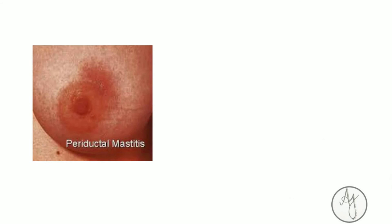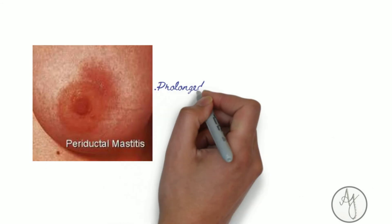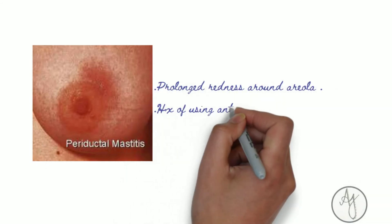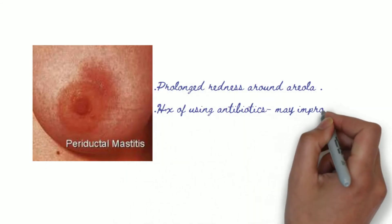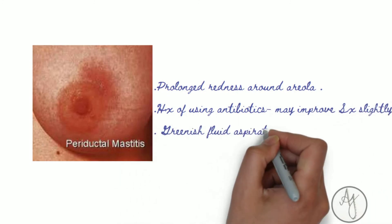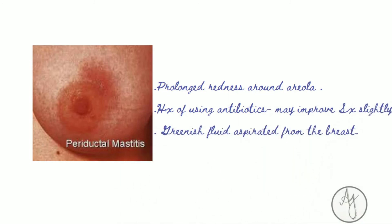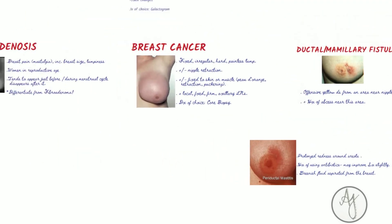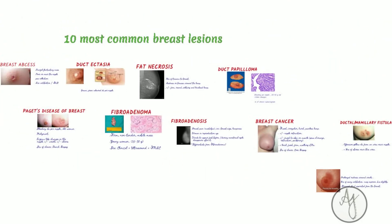If there is prolonged redness around the areola with a history of using antibiotics, which may improve the symptoms slightly, and greenish fluid is aspirated from the breast, it is mostly periductal mastitis.